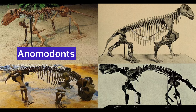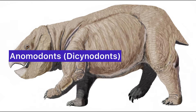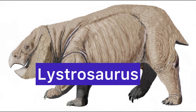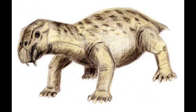Anomodonts, particularly the Dicynodonts, were highly successful and diverse herbivorous therapsids. Dicynodonts had a beak-like structure with most other teeth reduced or absent, indicating a specialized herbivorous diet. Lystrosaurus, a well-known Dicynodont, was extremely widespread by the end of the Permian and one of the few therapsid groups to survive the Permian-Triassic extinction event.